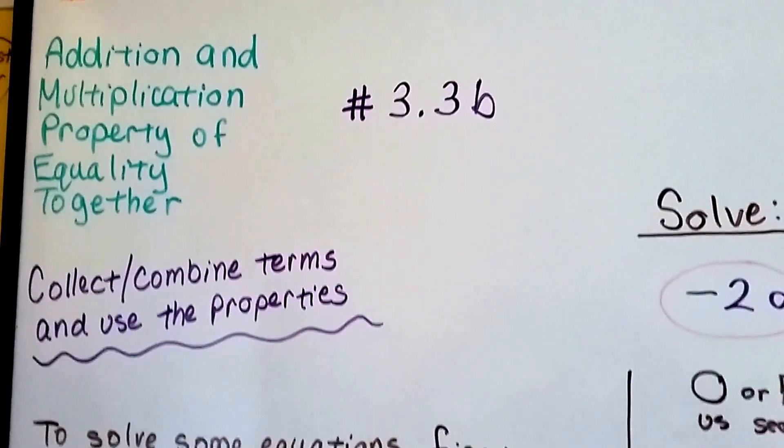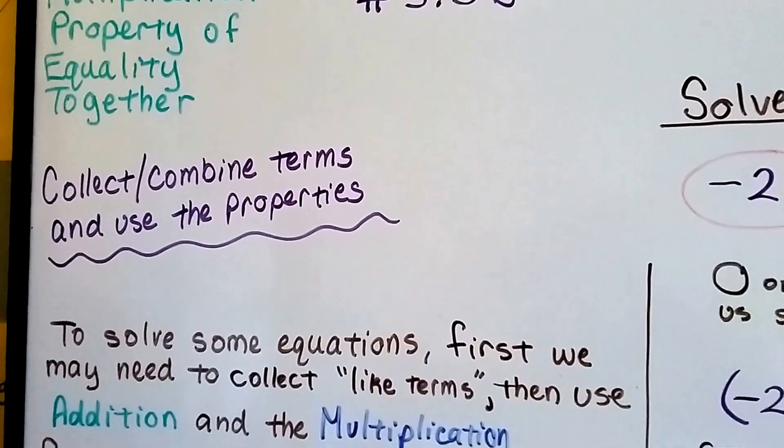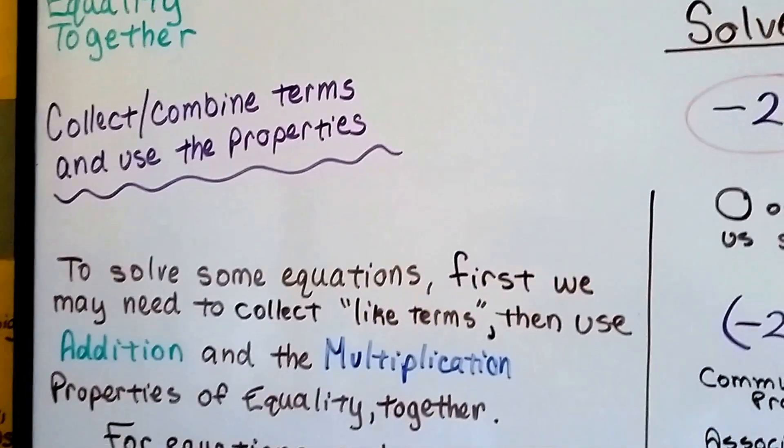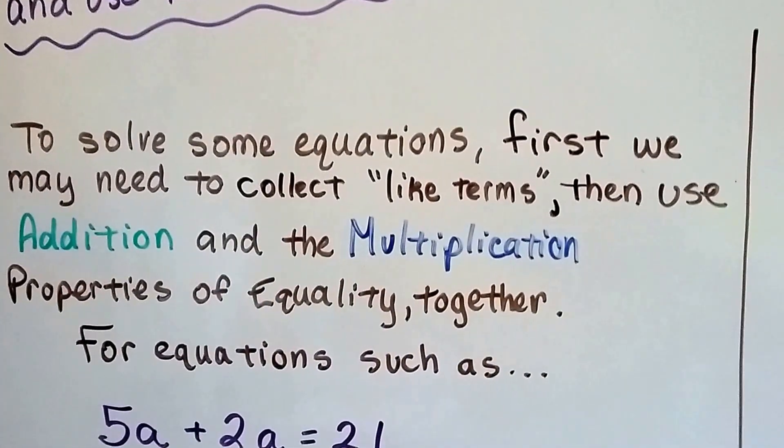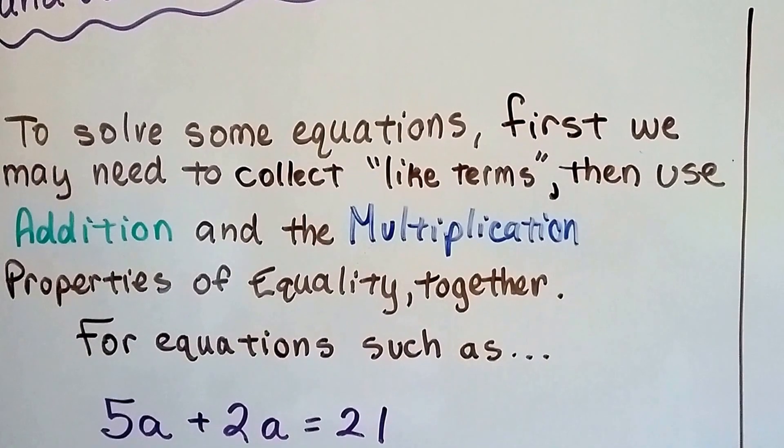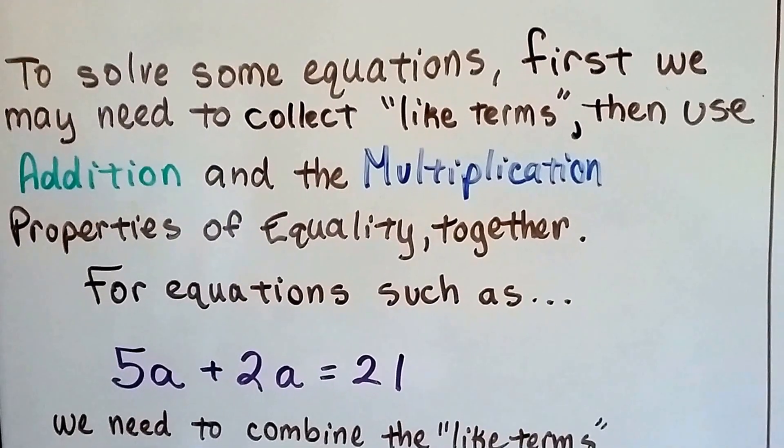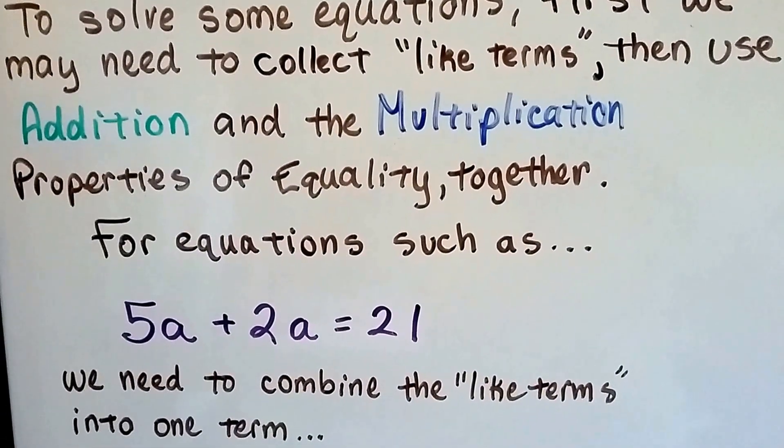We're going to talk about collecting and combining like terms using these properties together. To solve some equations, first we may need to collect like terms and then use the addition and multiplication properties of equality together.